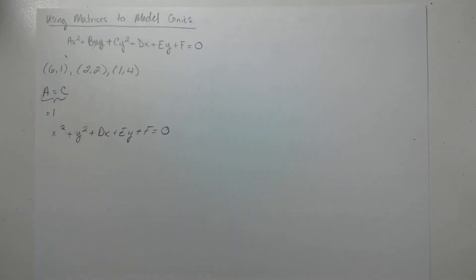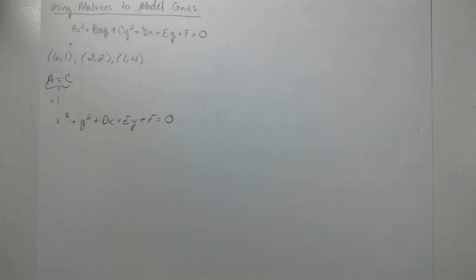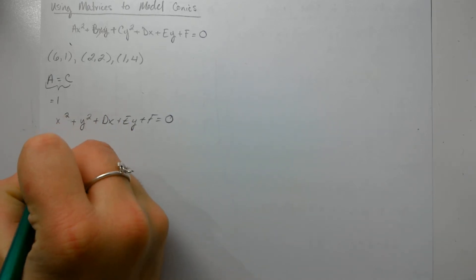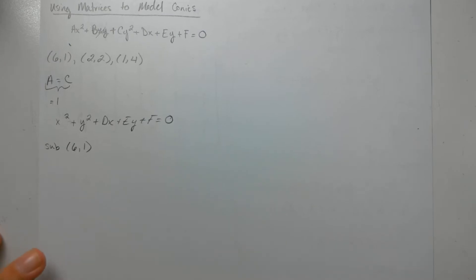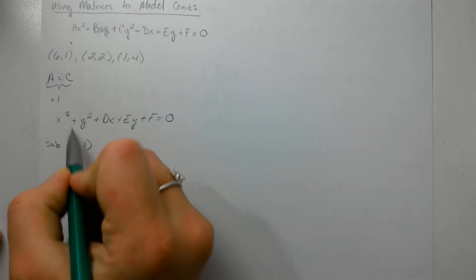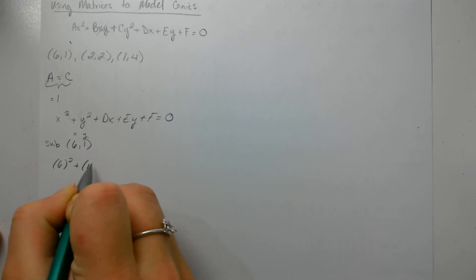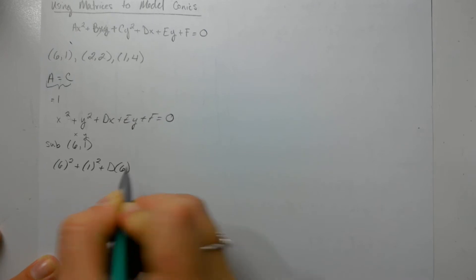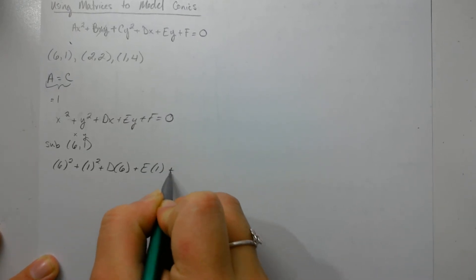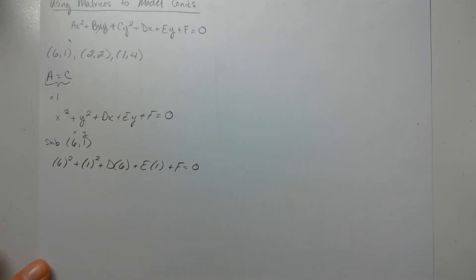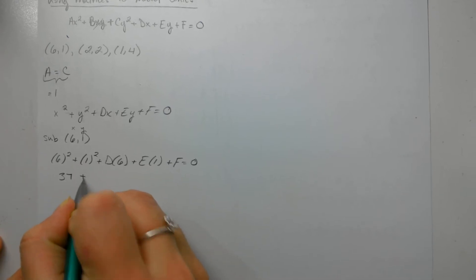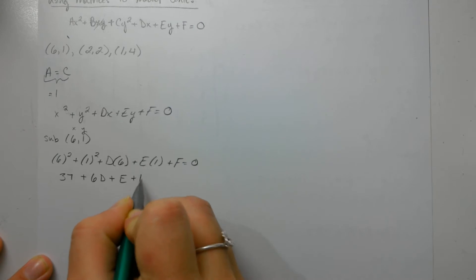That is your formula for a circle. Now that's what you're working with in order to solve this particular matrix. Your first step is substitution — I'm going to substitute my coordinates, which are (6, 1), into that formula. I'll plug in 6 for x and 1 for y in all places. So I have 6 squared plus 1 squared plus d times 6 plus e times 1 plus f equals 0, which gives you 37 plus 6d plus e plus f equals 0.